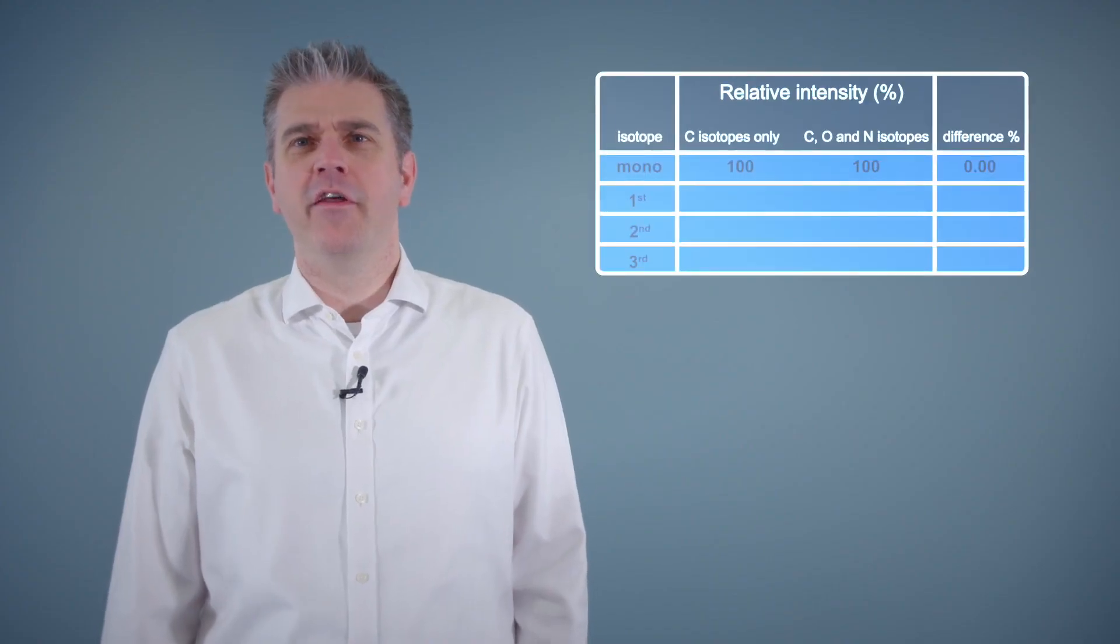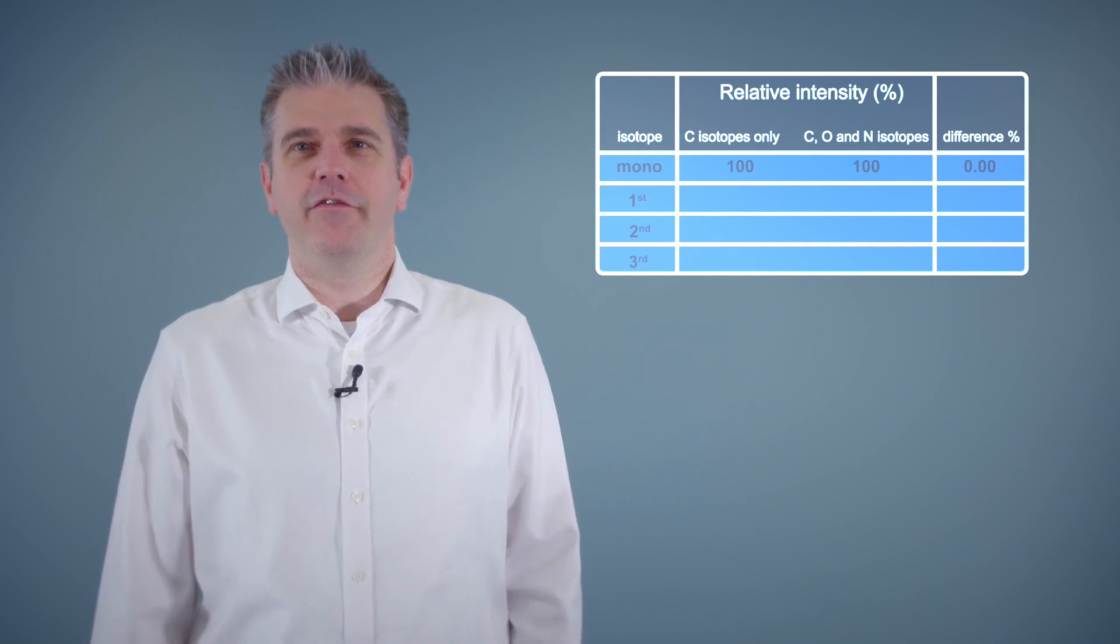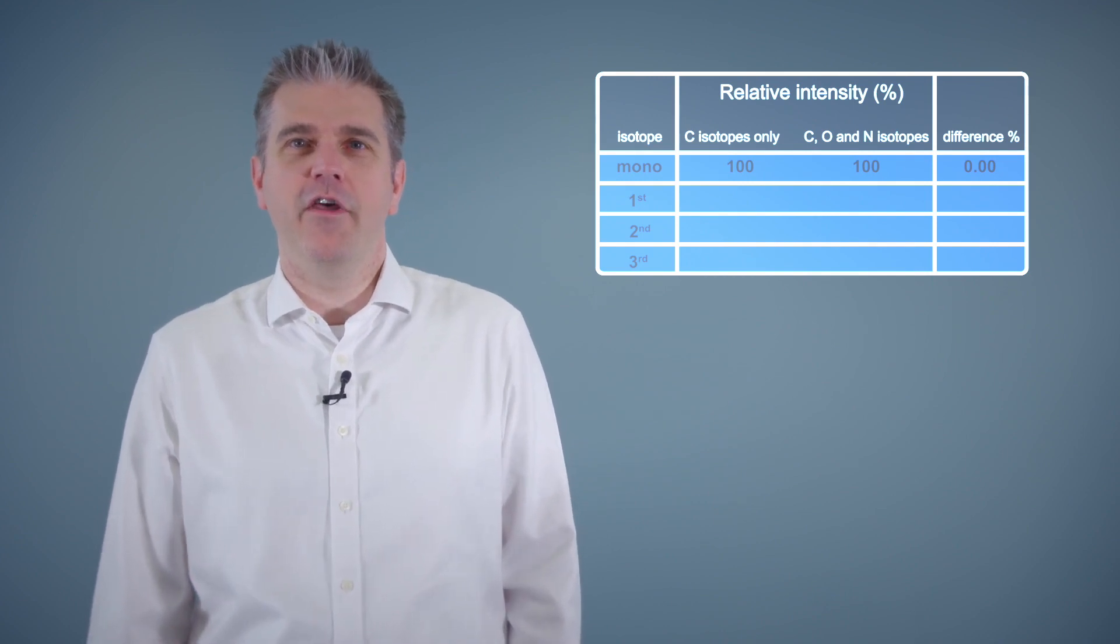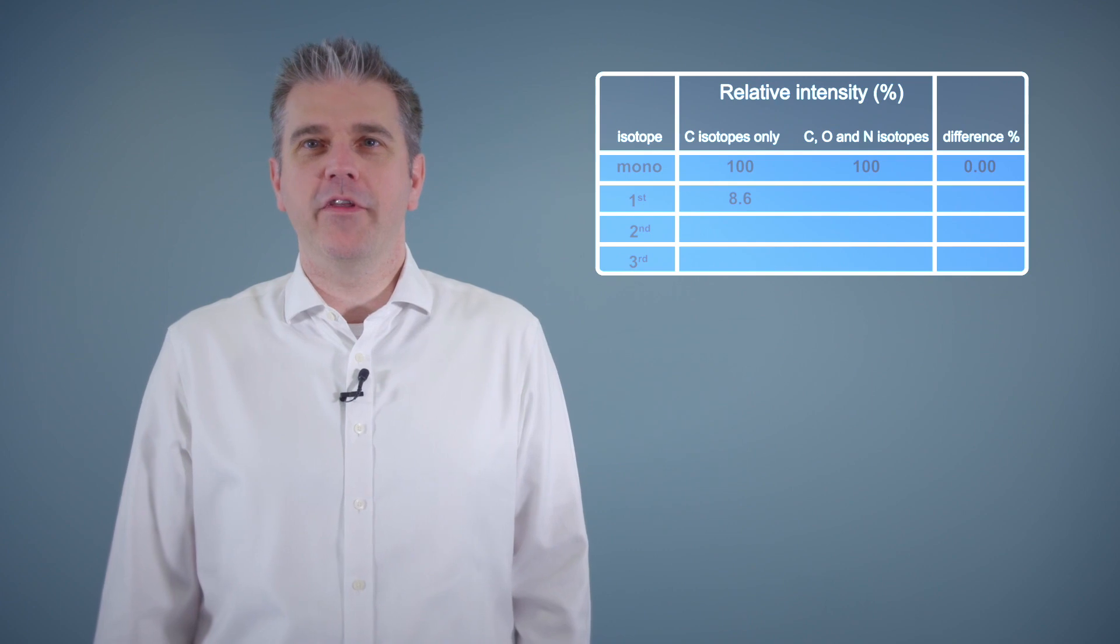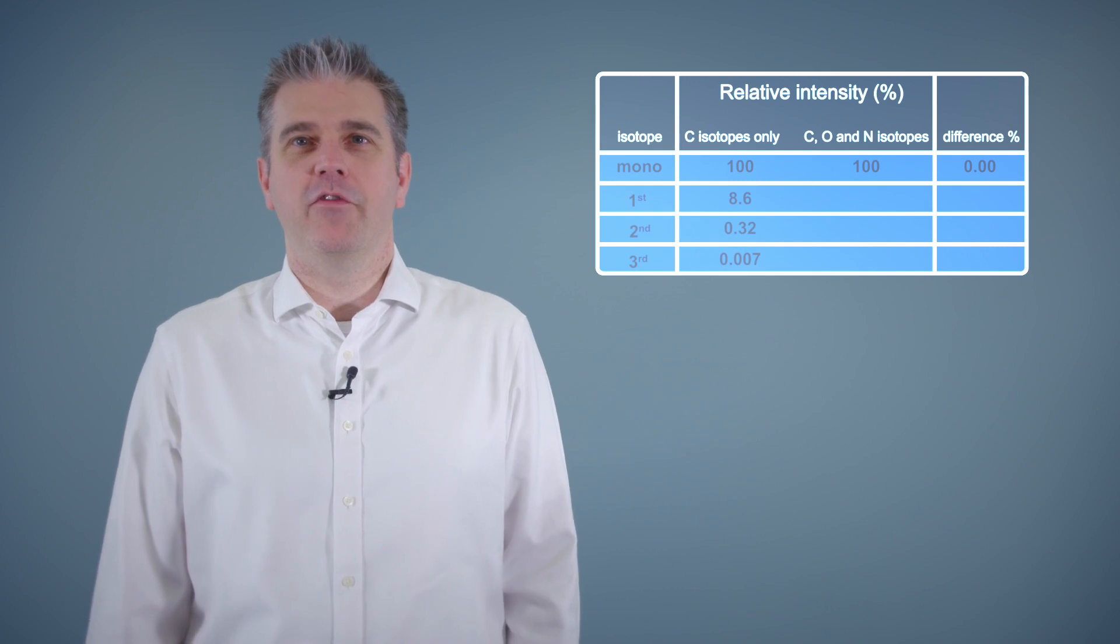If you were to consider the carbon isotopes in the prediction of the isotope pattern for caffeine, the first, second, and third isotopes would be at 8.6%, 0.32%, and 0.007% respectively.